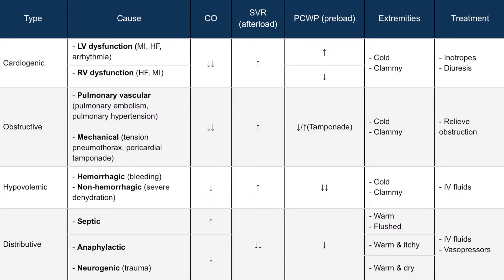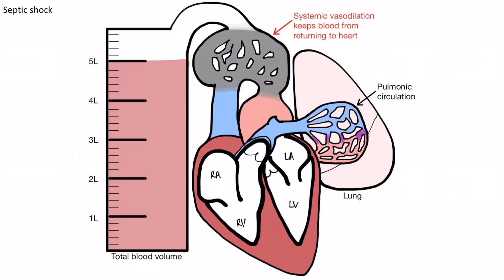The next and last type of shock we'll discuss is distributive shock. The unifying feature of the different types of distributive shock is profound vasodilation. Distributive shock is caused by excessive vasodilation. Septic, anaphylactic, and neurogenic shock are all types of distributive shock. Septic shock occurs due to pathogens causing the release of vasodilatory substances such as nitric oxide and histamine, resulting in a very low systemic vascular resistance.